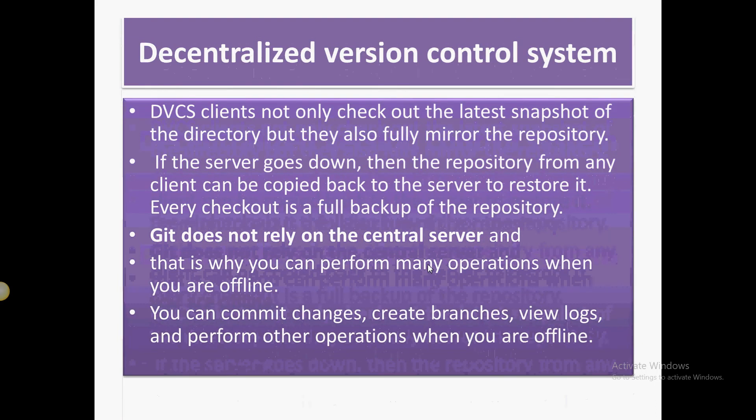Keeping in mind the drawbacks of a central server, Git was created on the concept of a decentralized version control system. In a decentralized system, each client checks out the latest snapshot before working. So if there are 50 people working, they all take the latest snapshot, meaning the real backup is on every machine.